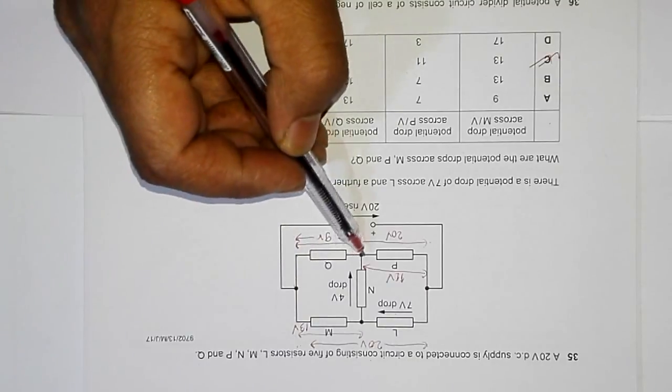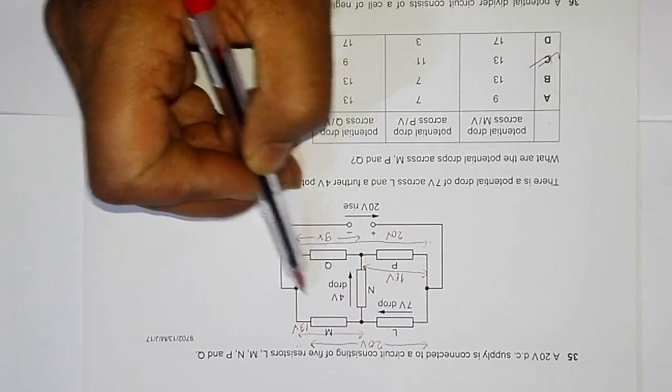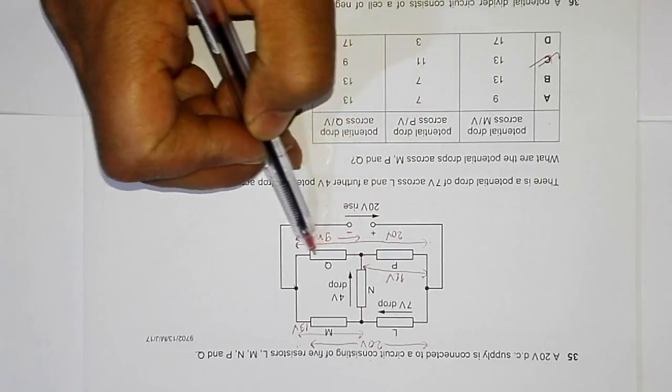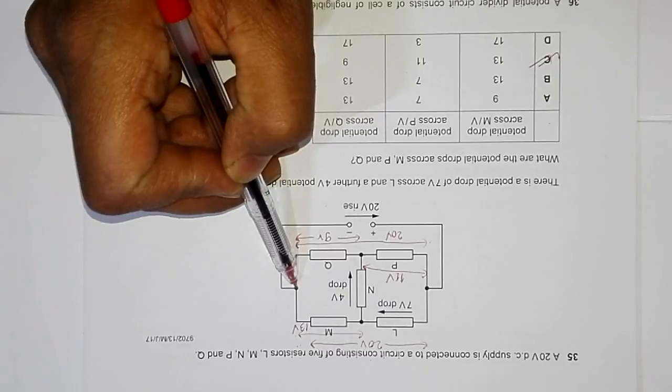Now looking at the other branch, from here to here it is 13 volt, and from here to here it should also be 13 volts because we are concerned with the same two points.